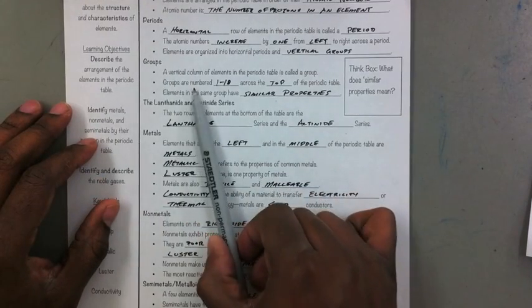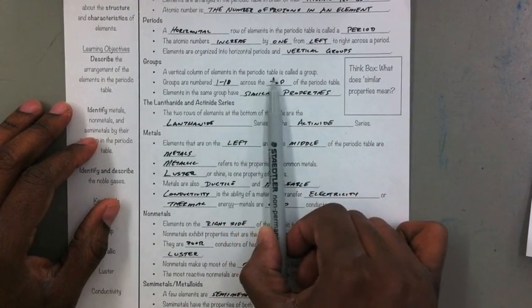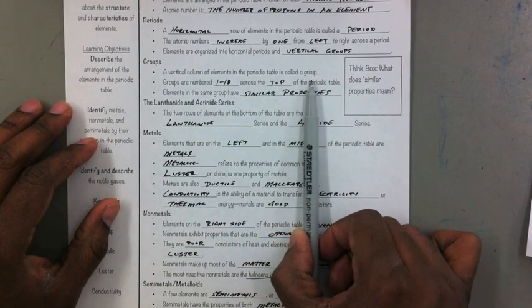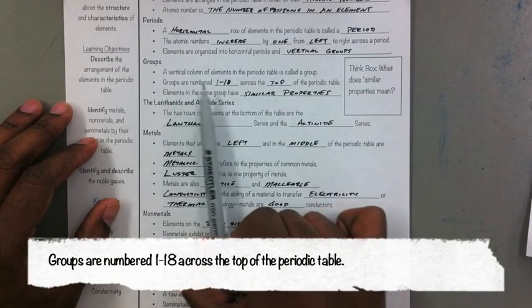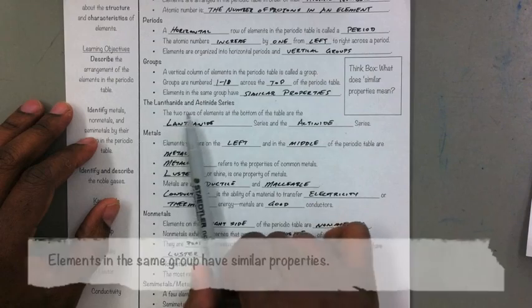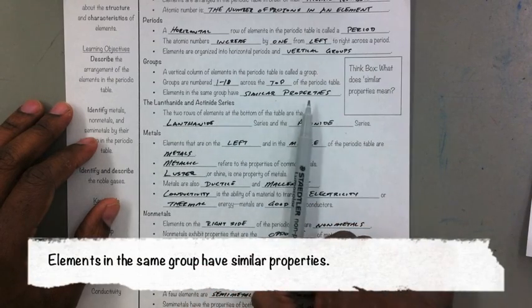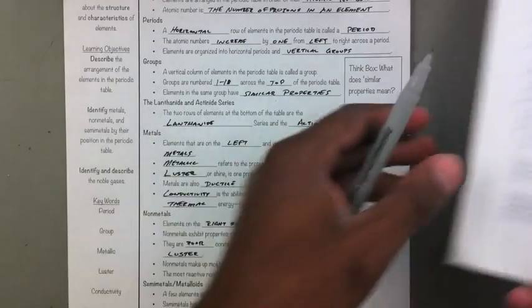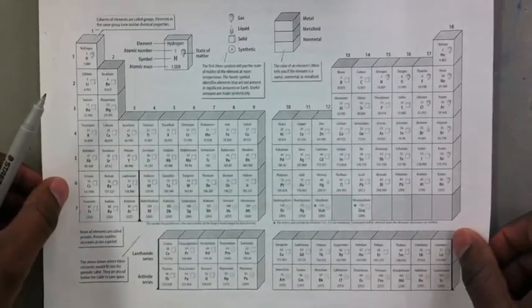A vertical column of elements in the periodic table is called a group. Groups are numbered one through eighteen across the top of the periodic table. Elements in the same group have similar properties. Remember, vertical means up and down.